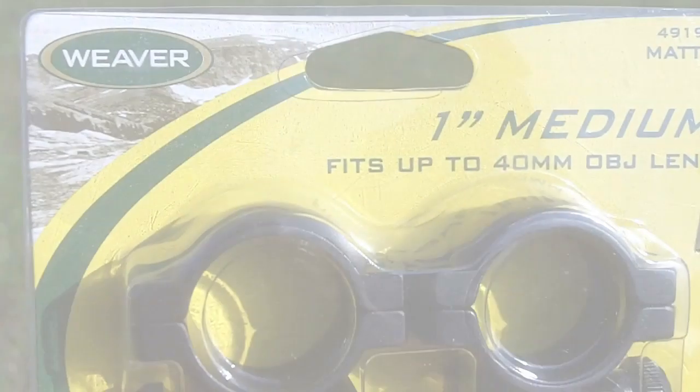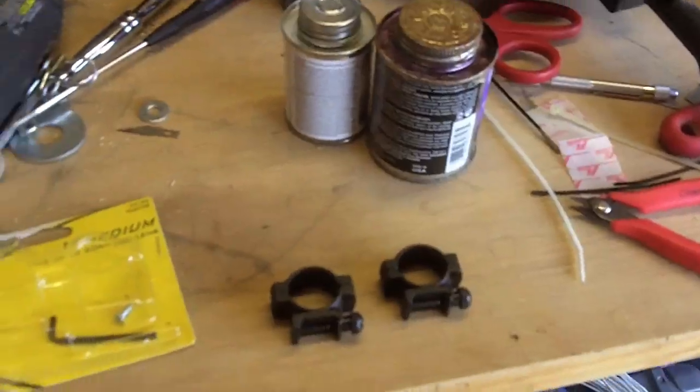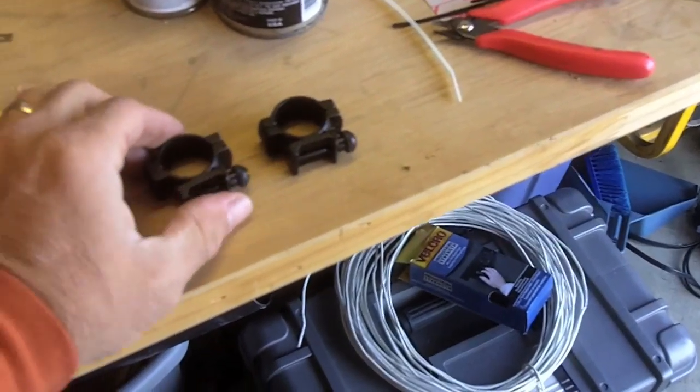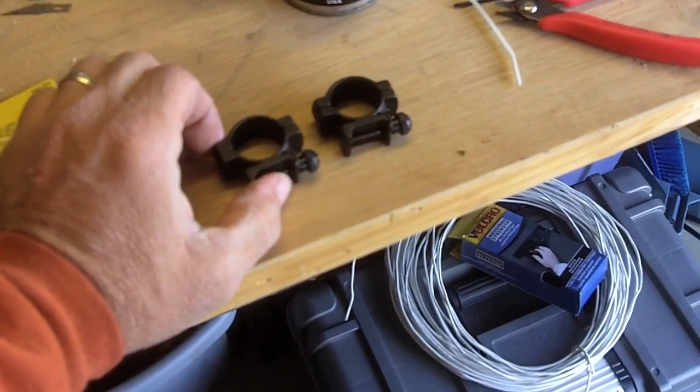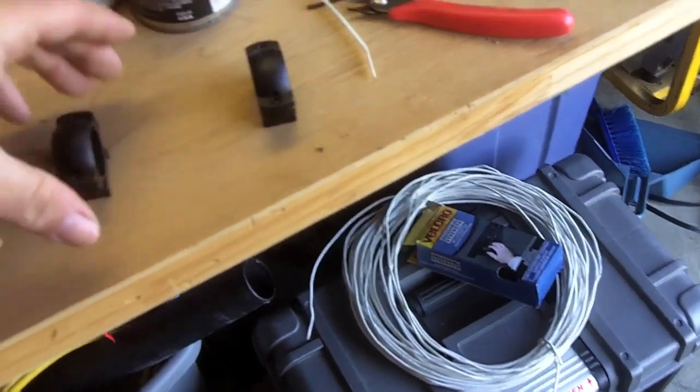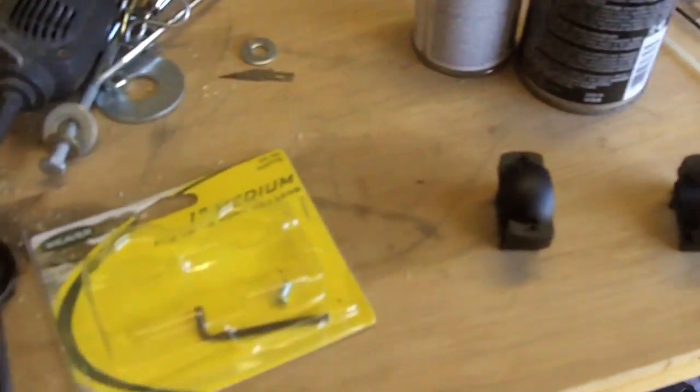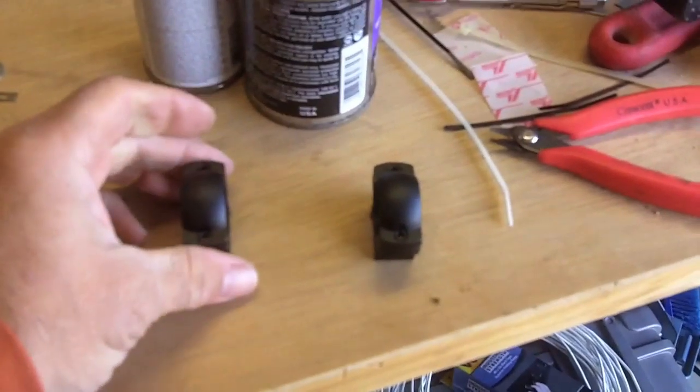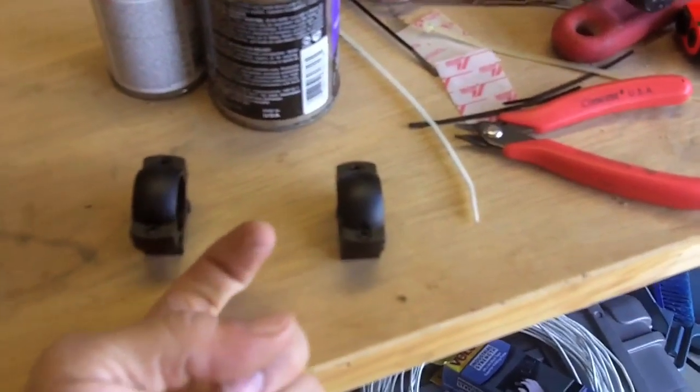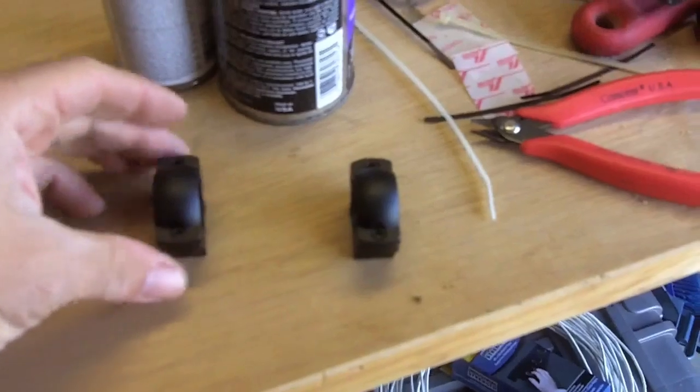Basically we got some cheap scope rings at Walmart. We're gonna mount this on the rail. I'm gonna take the tops off and put a piece of flat stock aluminum across these rails, and I'm gonna drill a hole in there so we can put a bolt into the bottom of his camera and he can mount his camera on the top of his AK.